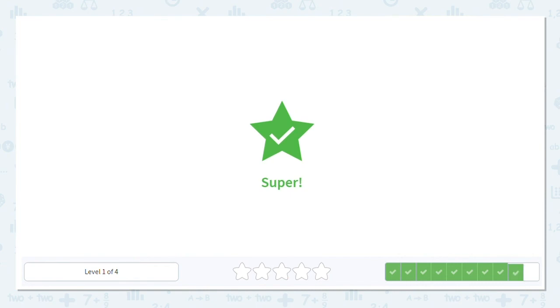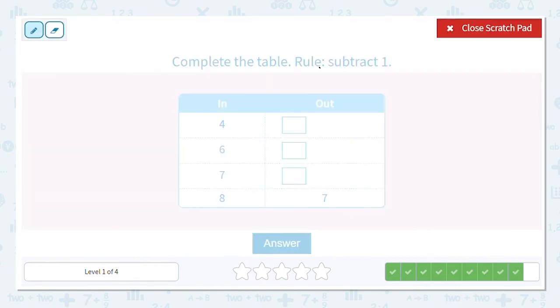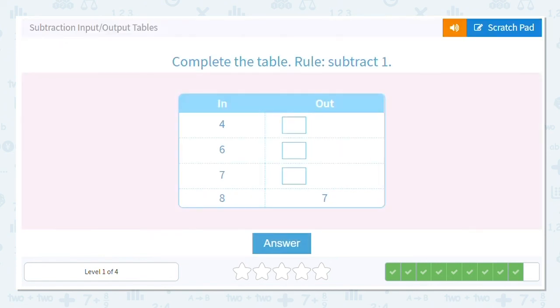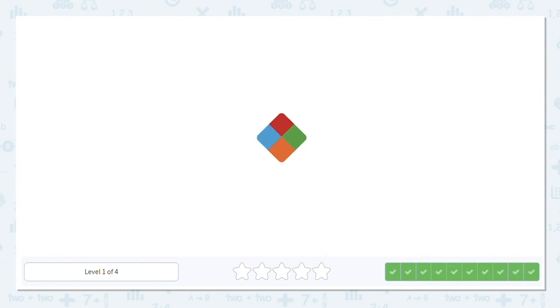And let's do one more. This time we're subtracting 1. And if you have an input-output table in front of you at any point, there's nothing that says you can't write on the table as a visual to help you answer the question. So 8 minus 1 does equal 7. So we know we're good to go. So 4 minus 1 equals 3, 6 minus 1 equals 5, and 7 minus 1 equals 6. 3, 5, 6, and 7. Great job with these subtraction input and output tables.